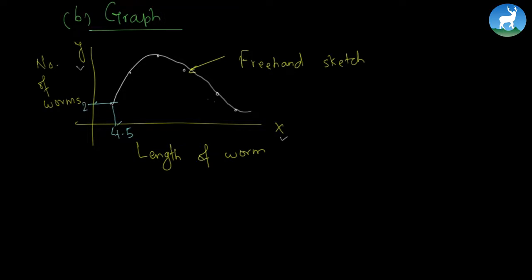This actually shows different kinds of information like the length of the worm and the number of worms. Let's say the length of the worm is 4.5 centimeters in this case and the number of worms is 2. So we have two worms of that length.